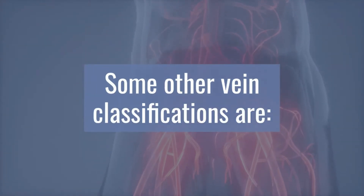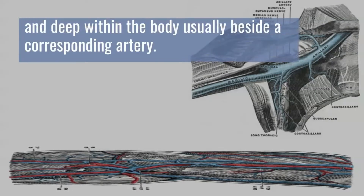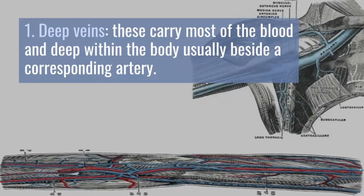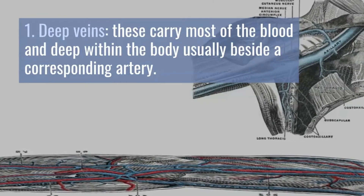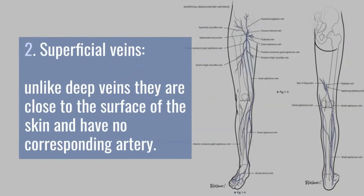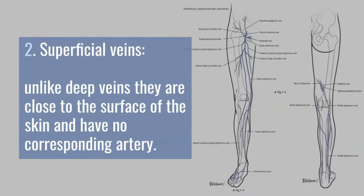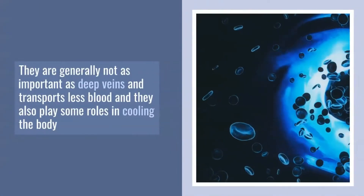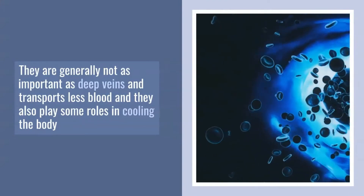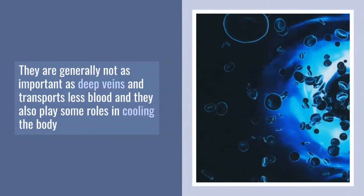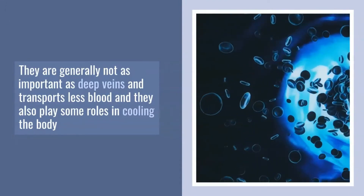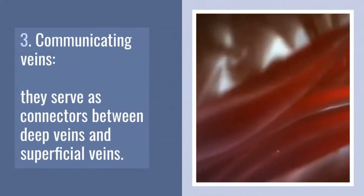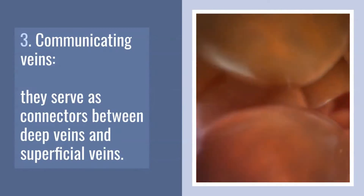Some other vein classifications include: deep veins, which carry most of the blood and are located deep within the body, usually beside a corresponding artery; superficial veins, which are close to the surface of the skin, have no corresponding artery, transport less blood than deep veins, and also play a role in cooling the body; and communicating veins, which serve as connectors between deep veins and superficial veins.